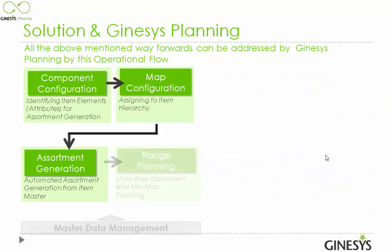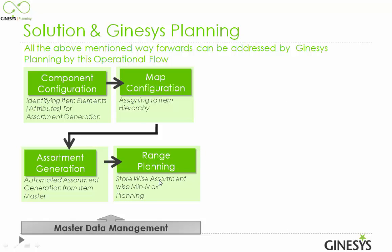Next is range planning, where we mark particular assortments for particular stores — defining what the minimum or maximum quantity will be kept. In other words, we are assigning certain assortments to certain stores where those assortments will be available. This part of Genesis Planning is called master data management.